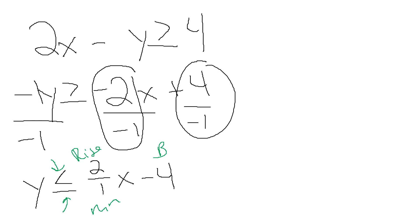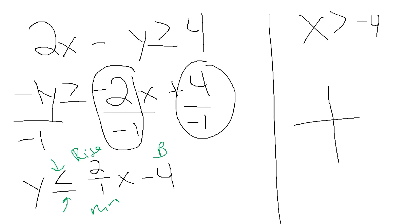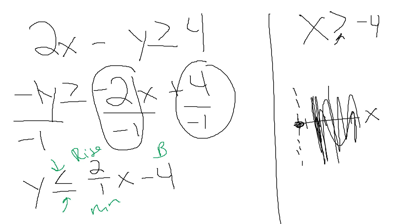Now on numbers eight and nine — let's look at number nine: X is greater than negative 4. When you graph something where you're only given X, you plot a point at X equals negative 4 and your line crosses that. This is just greater than — there is no equal to — so use a dotted line. This tells me everything on that side of it is shaded.